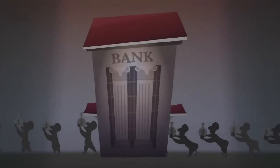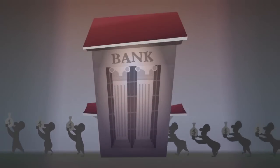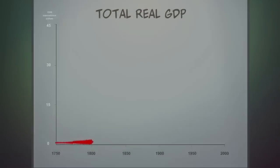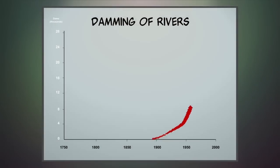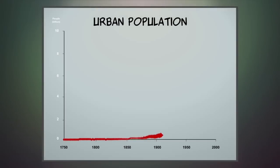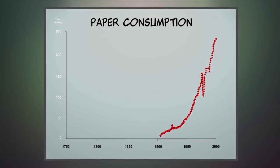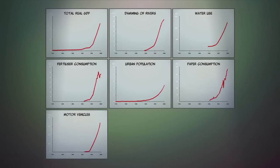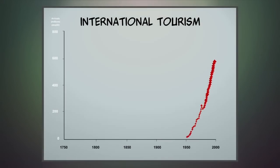Partly through this debt system, the effects of economic growth have been spectacular, in GDP, damming of rivers, water use, fertilizer consumption, urban population, paper consumption, motor vehicles, communications and tourism.